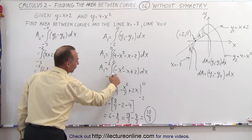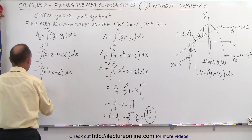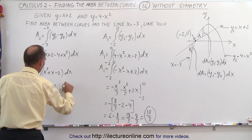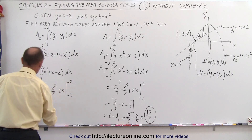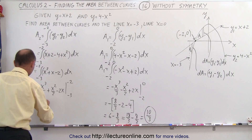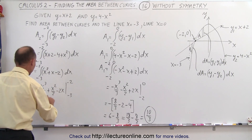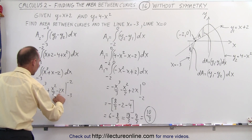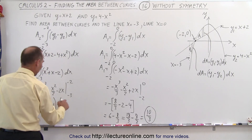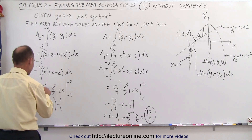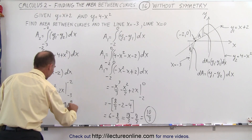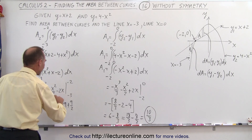That will be equal to x cubed over 3 plus x squared over 2 minus 2x, evaluated from negative 3 to negative 2. Plugging in the upper limit: we get negative 8 over 3, plus 4 over 2 which is plus 2, and minus 2 times negative 2 which is plus 4. Now subtracting the lower limit: we get negative 27 over 3 which is negative 9, then 9 over 2, and here negative 3 times negative 2 which is plus 6.